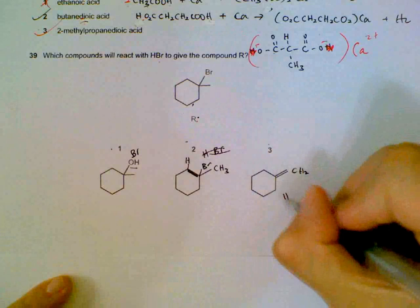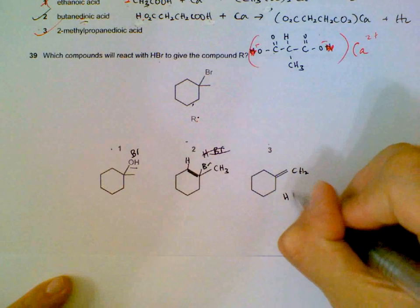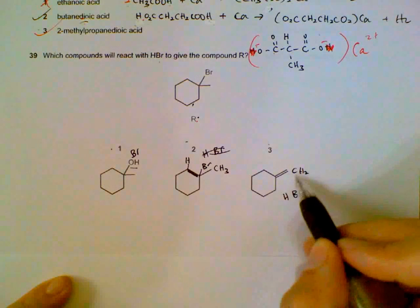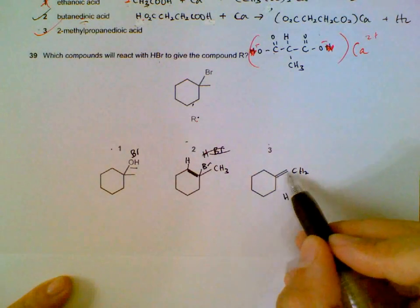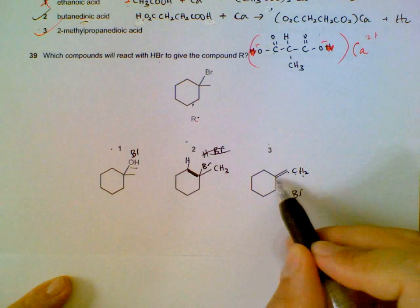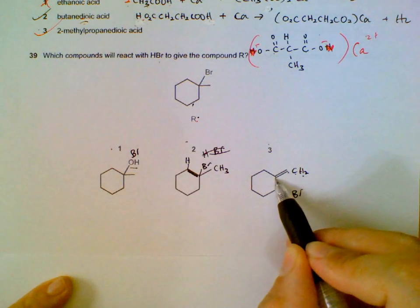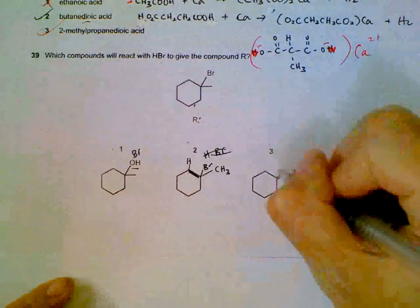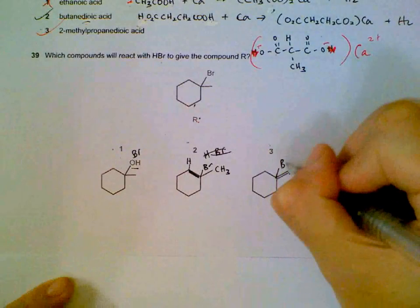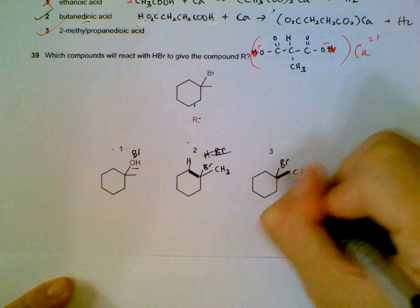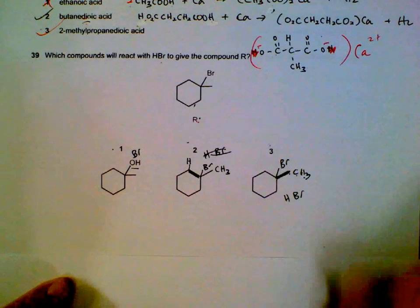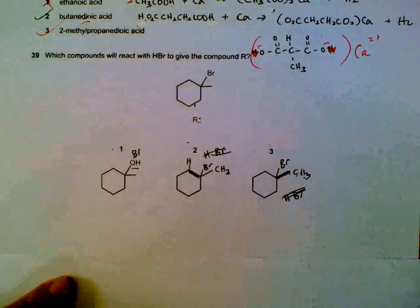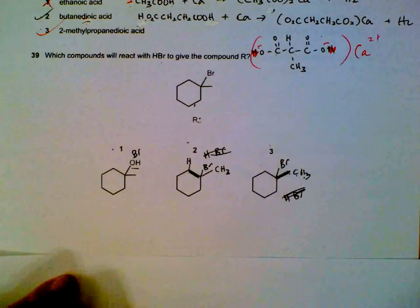For compound 3: again, HBr addition across a double bond, but a different molecule. The H attaches to the carbon with more hydrogens — this carbon has no hydrogen at all — so CH3 forms here and Br attaches to that carbon. We end up with compound R. So all three molecules can react with HBr to give compound R.